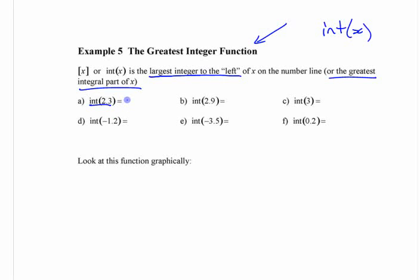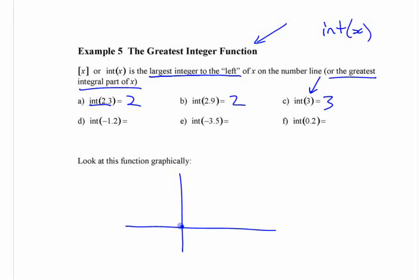The greatest integer of 2.3 is 2 — that's the integer part of it. The greatest integer of 2.9 is 2. The greatest integer of 3 is 3, because it's made it to 3. If you have a graph of this function, as soon as you get to 1 the greatest integer is 1, and it stays 1 right until you get to 2. Then it jumps up, and at 3 it jumps up to 3. So it looks like steps.